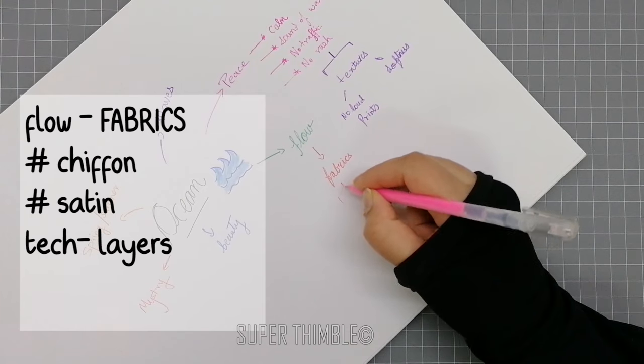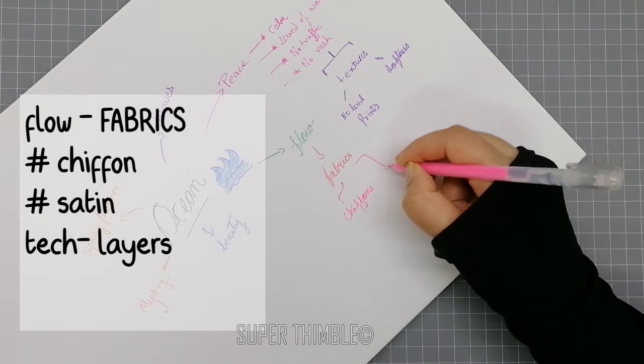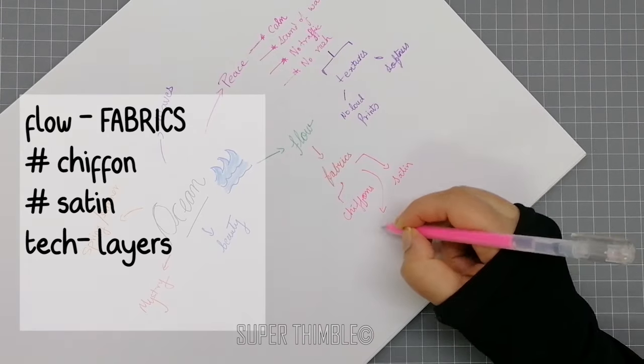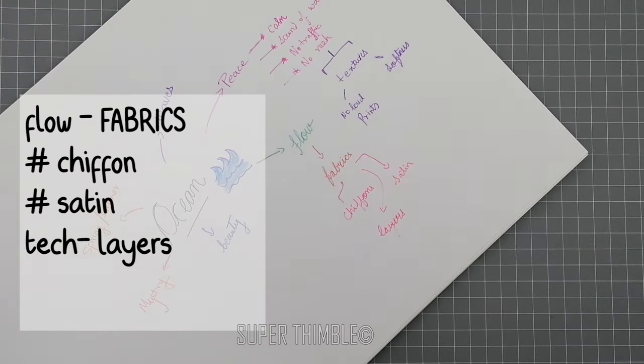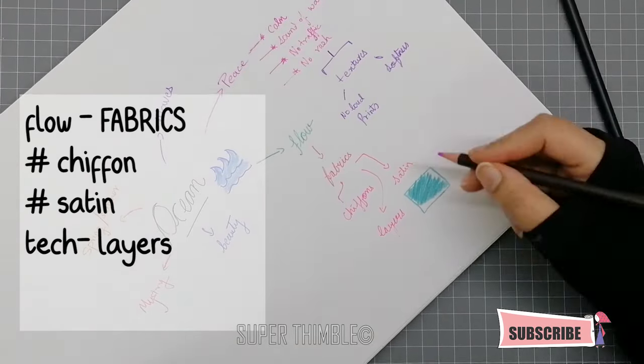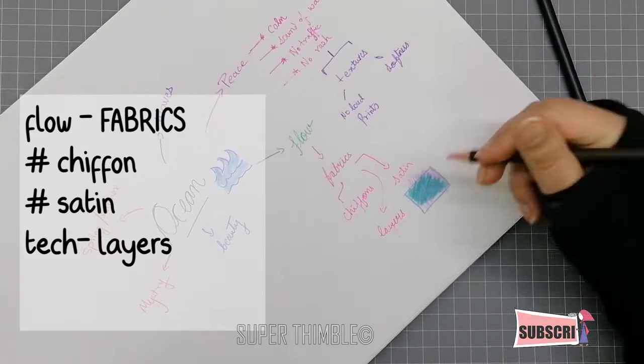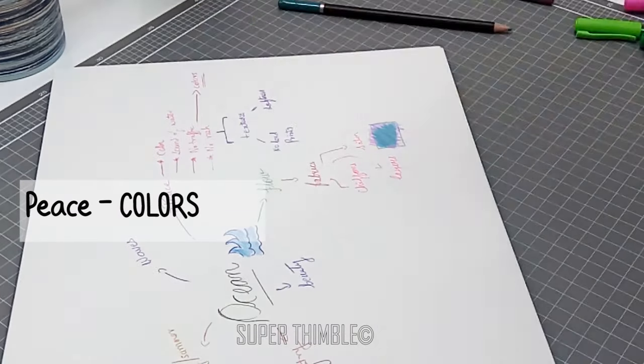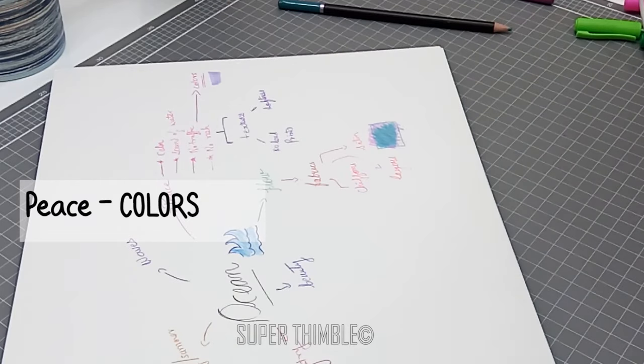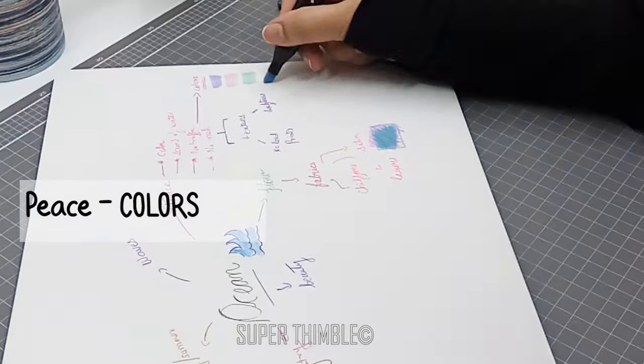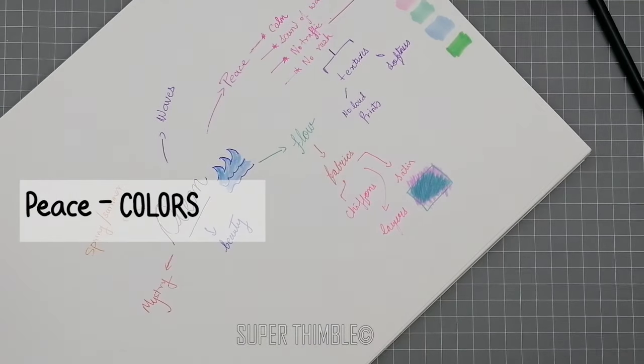I wanted to describe the word flow in terms of fabrics like chiffon, satin. Satin has a beautiful reflection, same as water. Maybe I can have layering. To me, the flow of water has layers, maybe two different colors. With the words peace and its subcategories, I want to define it in terms of colors like pale lilac, pink, light spectrum green, baby blue, pale green, sky blue.